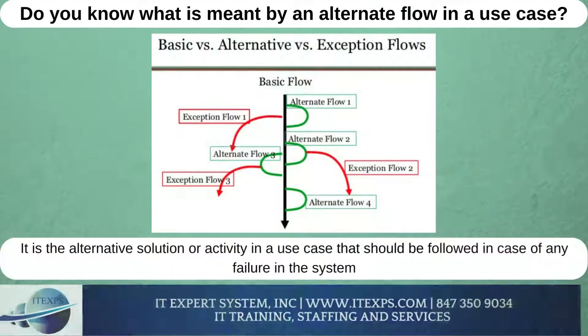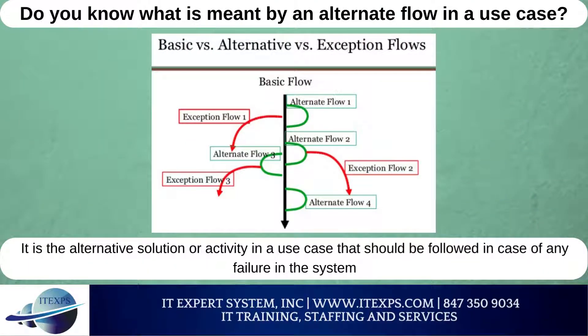Do you know what is meant by an alternate flow in a use case? It is the alternative solution or activity in a use case that should be followed in case of any failure in the system.